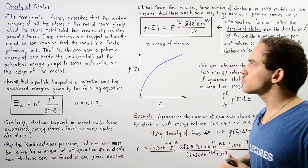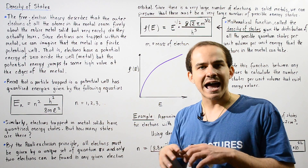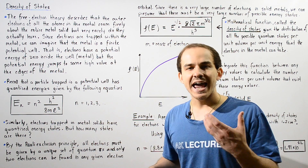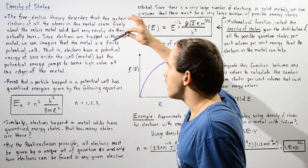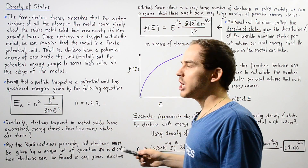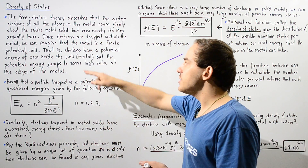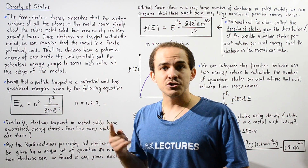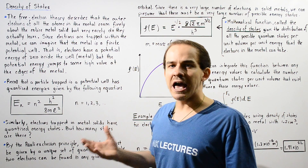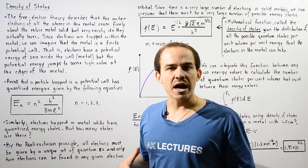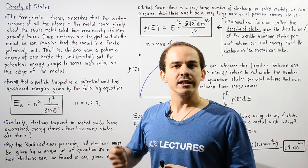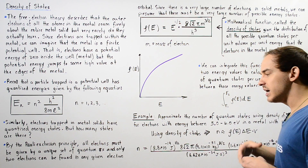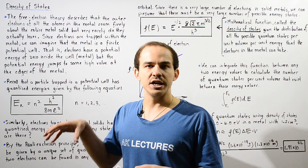Since electrons are trapped within the metal, we can imagine that the metal actually acts as if it were a potential well — a finite potential well, also known as a rigid box. That is, electrons have an electric potential energy of zero when they're inside the metal, and they can move about freely. But the electric potential energy jumps to a very high value when those electrons reach the surface, so they don't have enough energy to overcome that high potential barrier and remain within the metal.